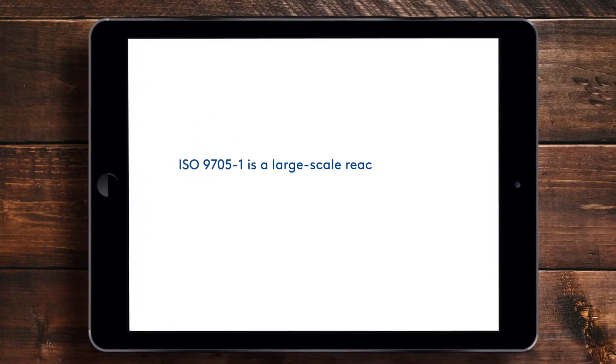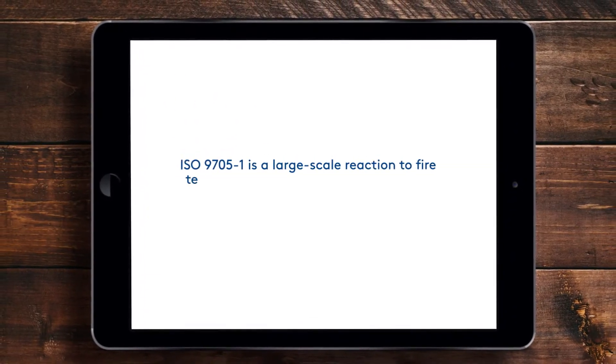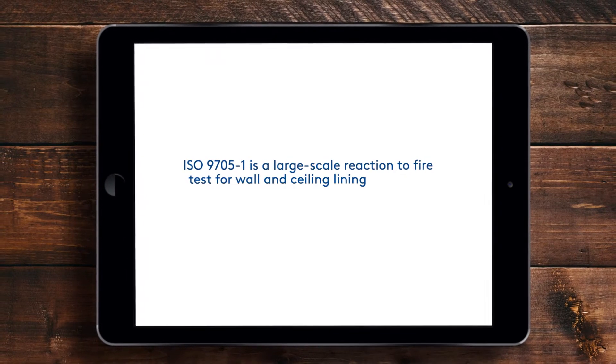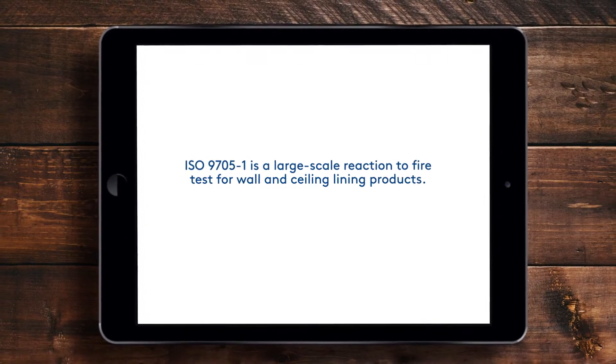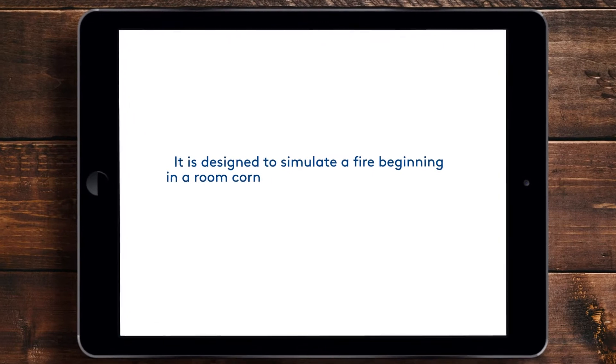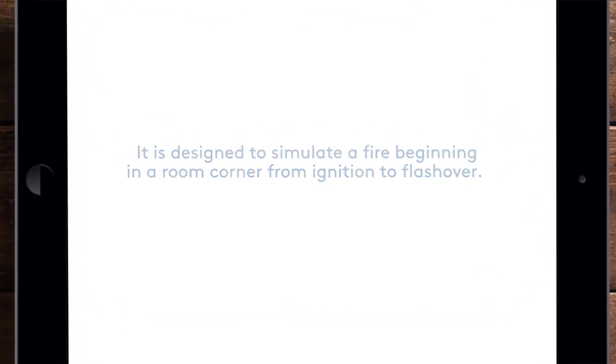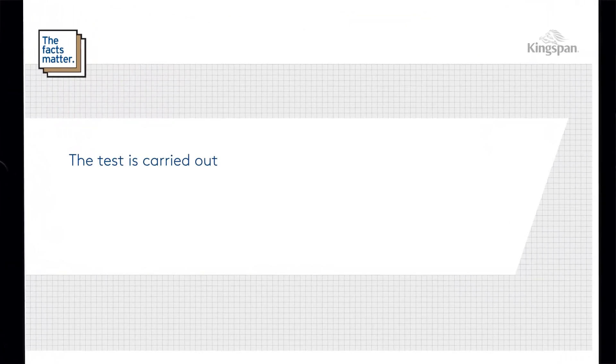ISO 9705 Part 1 is a large-scale reaction to fire test for wall and ceiling lining products. It is designed to simulate a fire beginning in a room corner, from ignition to flashover.